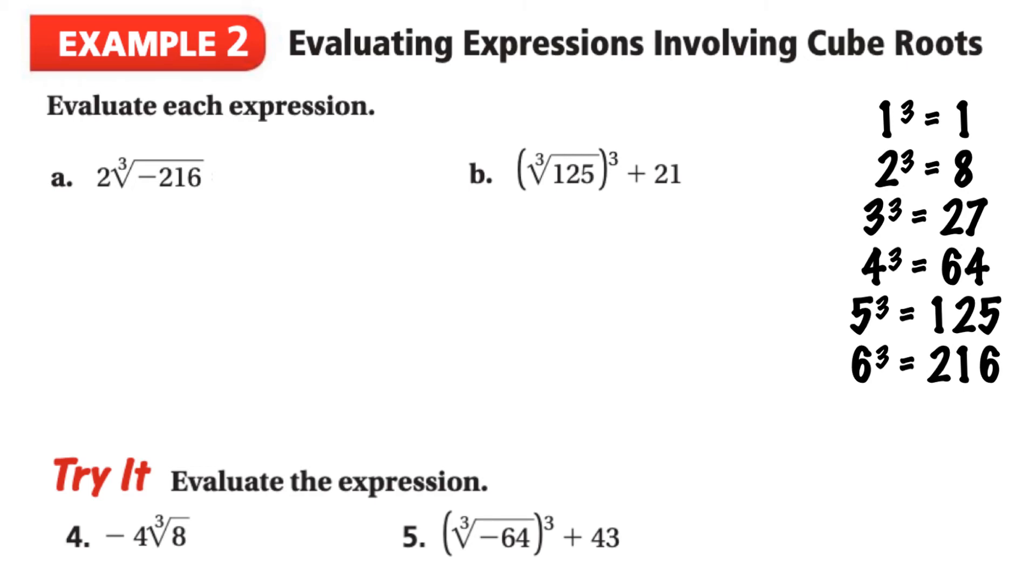Moving on to example 2, we're going to evaluate expressions involving cube roots. For letter A, we've got 2, and then right beside it we've got the cube root of negative 216. We have to remember that since we see these two beside each other like this, there's a multiplication sign that we don't see. So 2 is being multiplied to the cube root of negative 216. We can look at our chart again looking for 216, here it is. The cube root of 216 is 6, but this is negative, so my answer needs to be also negative, so this is negative 6. Then I've got 2 times negative 6, which gives us negative 12.